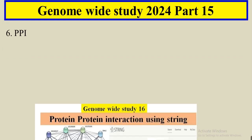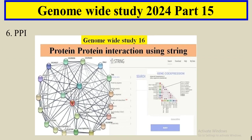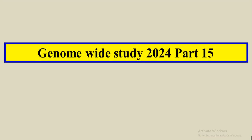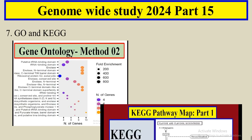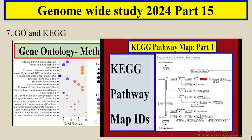The sixth analysis is the protein-protein interaction (PPI) — what types of proteins interact with your protein family, or whether there is any interaction within your protein family members. The seventh is Gene Ontology (GO) analysis and KEGG analysis. You can also show the pathway in which your gene is functioning.